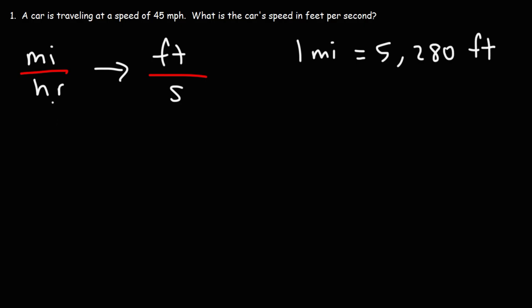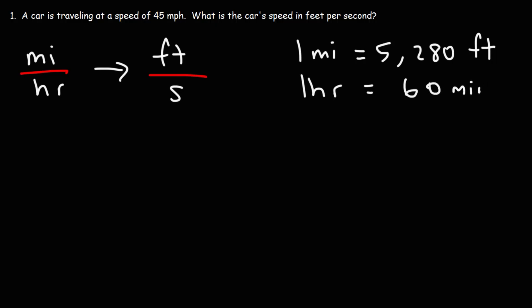Next, we need to convert units of time from hours to seconds. One hour is 60 minutes, and one minute is equal to 60 seconds. So we'll have to convert from hours to minutes to seconds. Let's go ahead and begin.